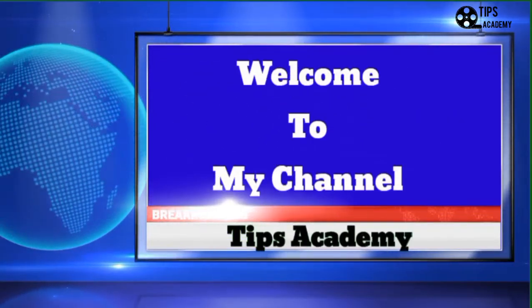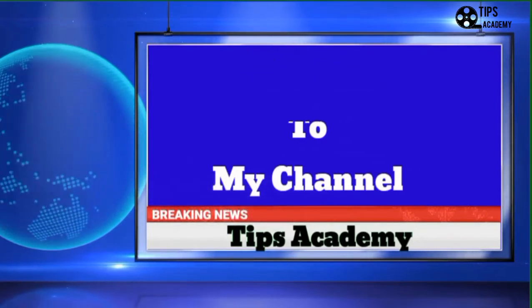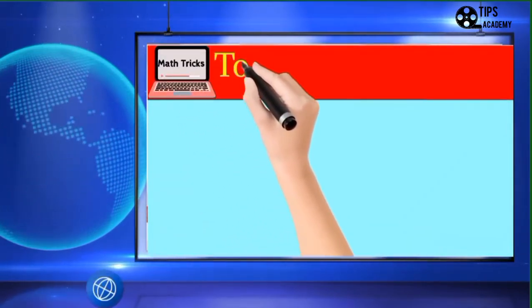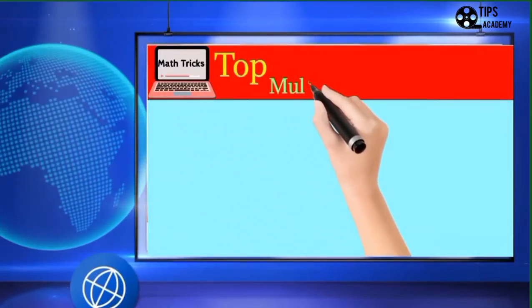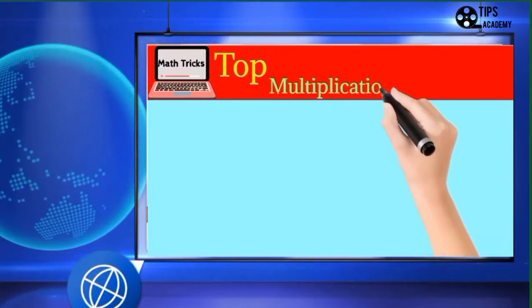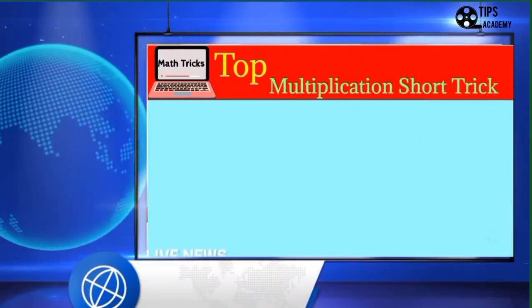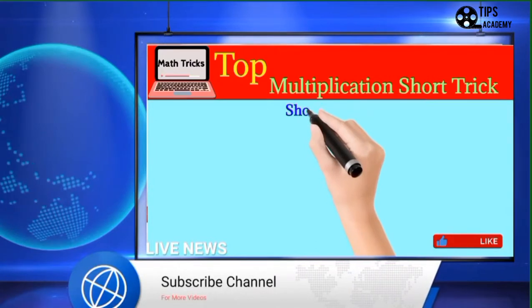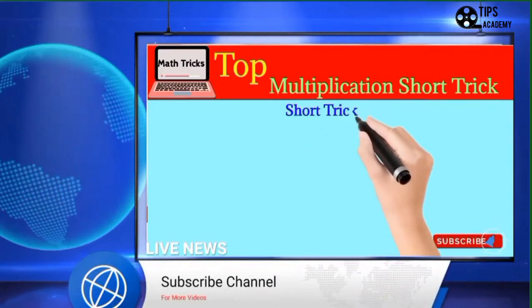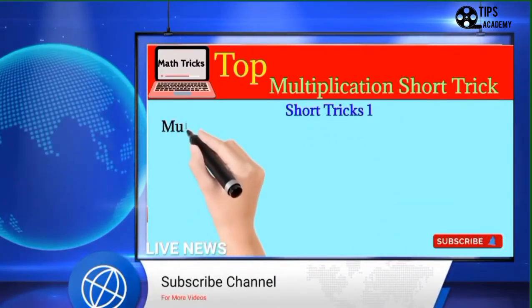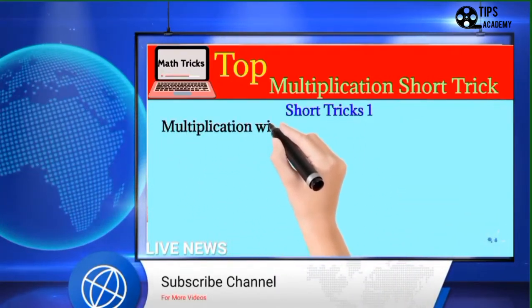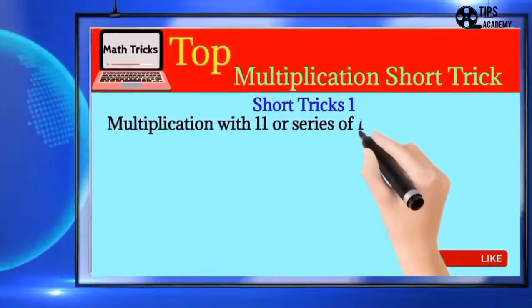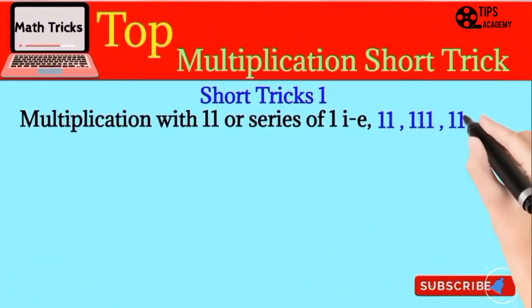Welcome to my channel. Today we will discuss math short tricks. I will tell you the top multiplication short tricks. Let's start with short trick number one: multiplication with 11, or a series of ones, that is 11, 111.